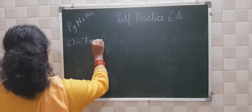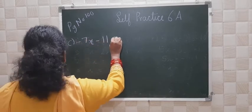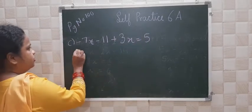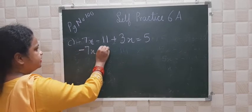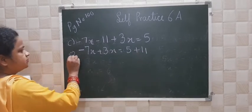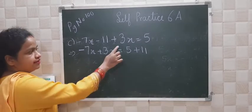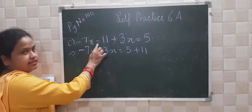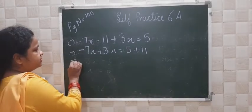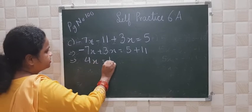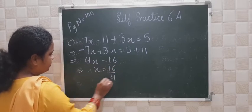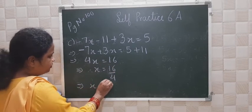Now part C: minus 7x minus 11 plus 3x is equal to 5. So now you have minus 7x plus 3x on the left, and minus 11 goes towards the right hand side so it will become plus 11. That gives minus 7x plus 3x equal to 5 plus 11, which is further equal to minus 4x — wait, 4x — equal to 16. So the value of x is 16 by 4, and x is equal to 4.